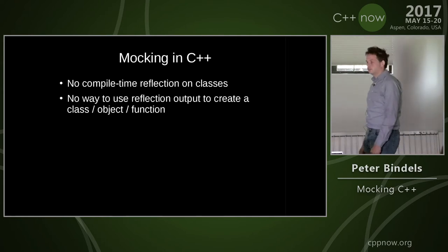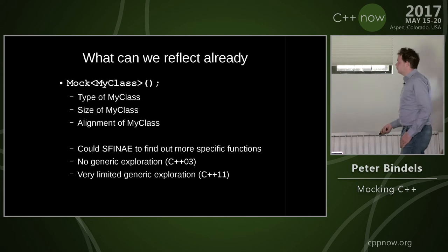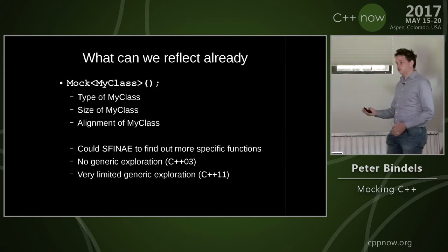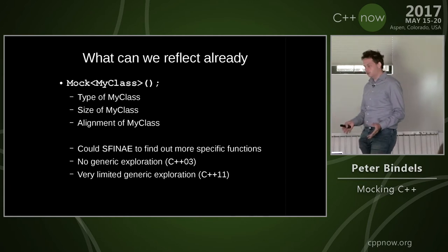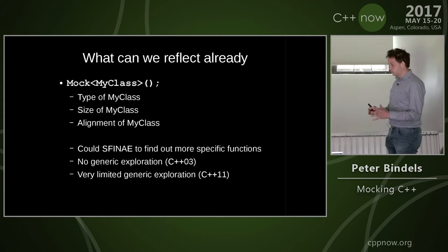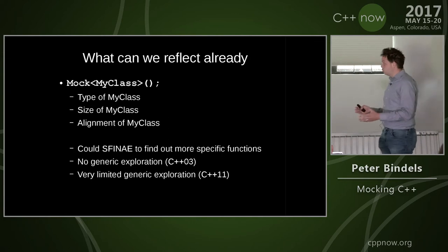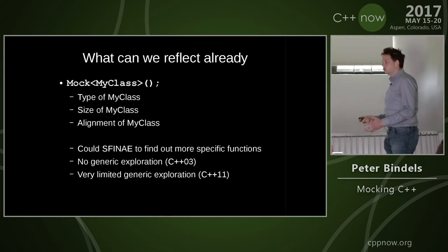So what can we get? If I look at a mock of a class, it tells me the type, the size, the alignment. I could try to get specific functions out, try to match them, and if it matches I know there's a function with that name and I could get the arguments — but that's just for specific functions. There's no way to generically explore anything in the class at all, up to C++03. Anthony Pelukhin found a way to do limited exploration of everything except functions — you can reflect data members by trying to aggregate-initialize in place. But in this case we're interested in everything but the data members, so there's something but nothing of use.